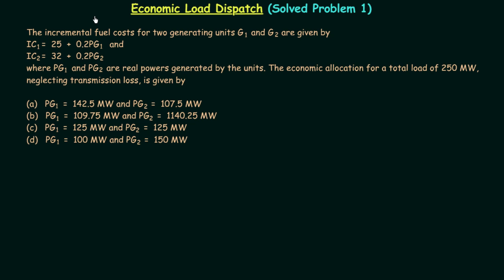In the previous lecture we completed economic load dispatch and now it's time to solve one problem based on it. In this problem, the incremental fuel costs for two generating units G1 and G2 are given, where PG1 and PG2 are real powers generated by the units. We need to calculate the economic allocation for a total load of 250 MW, neglecting the transmission losses. This is the problem and you can see four options on your screen.